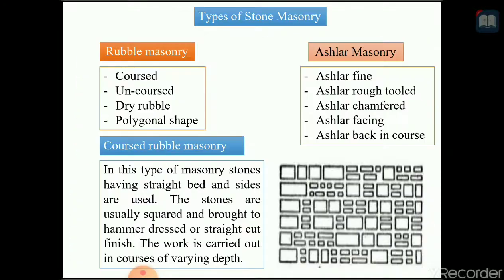Now we have to see the types of stone masonry. Stone masonry is divided into two parts: the first part is rubble masonry and the second part is ashlar masonry. Rubble masonry is divided into four parts and ashlar masonry is divided into five parts.